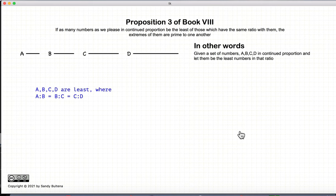Now, this proposition says that if we have a set of numbers, ABCD, in continuous proportion and they are the least of these numbers that are of this proportion, then the extremes of this series will be relatively prime to each other.